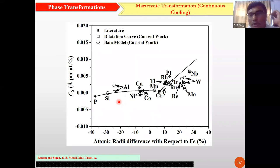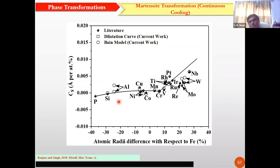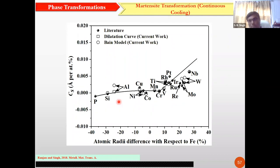Singh: Scatter can be on account of various aspects — heterogeneity in the material or the way measurements are made. Calculations cannot take those into account unless the input contains that information. We give a definite carbon, manganese, or silicon content and a given cooling rate, whereas in experiments there could be deviations from nominal values. For example, cooling cannot be uniform across the cross-section, or the way you detect the beginning of martensite transformation could vary. These are the issues that give rise to scatter, apart from heterogeneous distribution of carbon or other alloying elements.